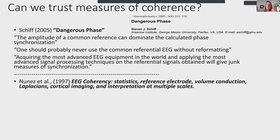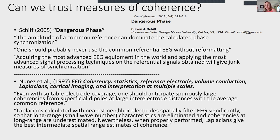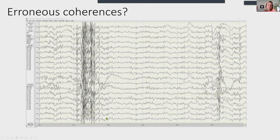Steven Schiff's article 'Dangerous Phase' states: the amplitude of a common reference can dominate the calculated phase of synchronization — one should probably never use a common referential EEG without reformatting. Acquiring the most advanced EEG equipment and applying the most advanced signal processing on referential signals will give junk measures of synchronization. Nunez from UCLA adds: even with 32 or 64 channels, anticipate spuriously large coherences from superficial dipoles at large inter-electrode distances with the average common reference. Laplacians give the best intermediate spatial range estimates of coherence.